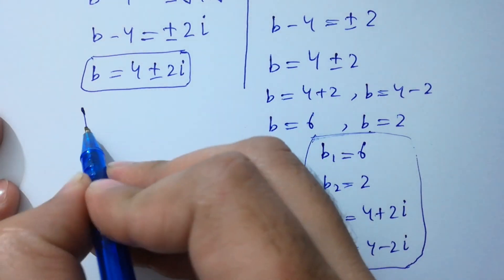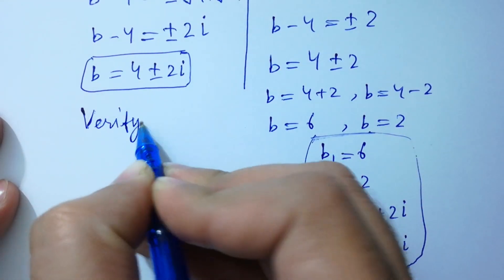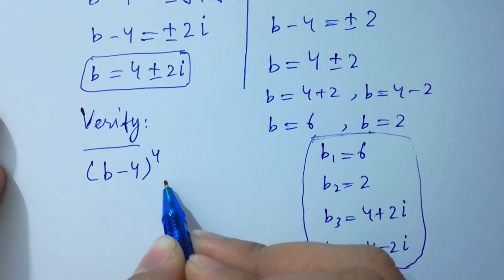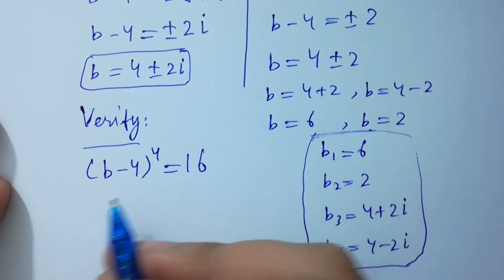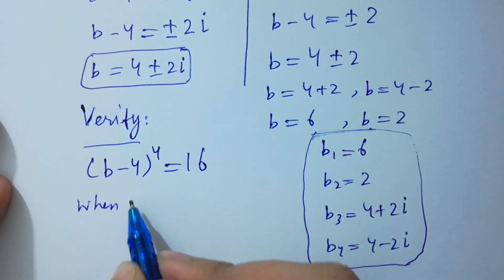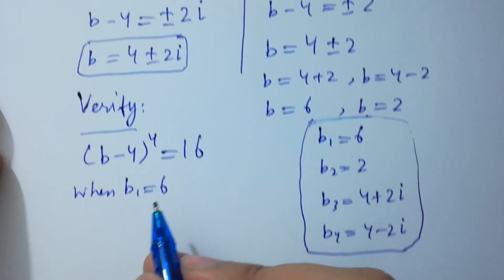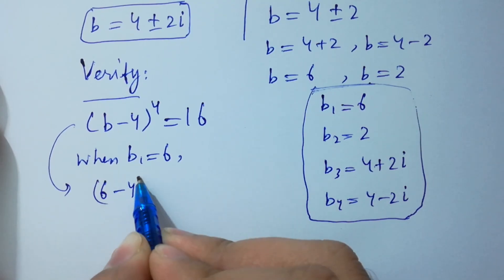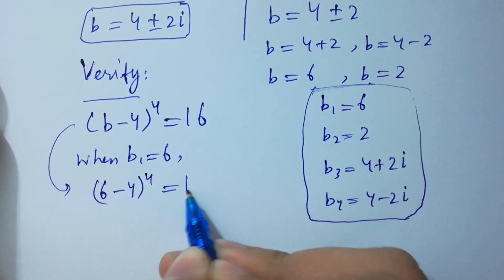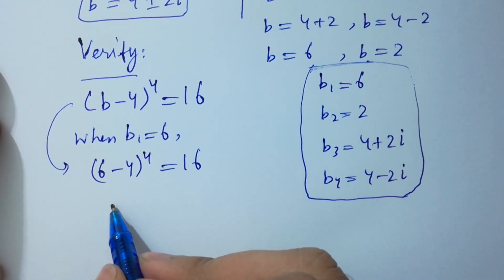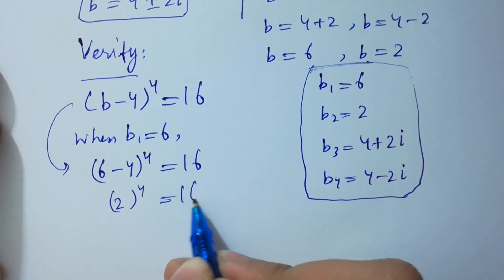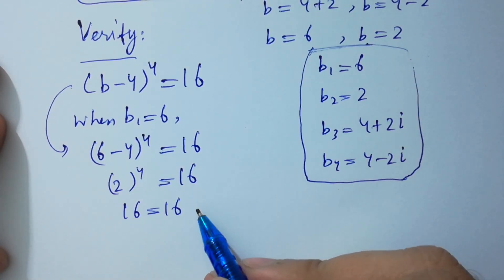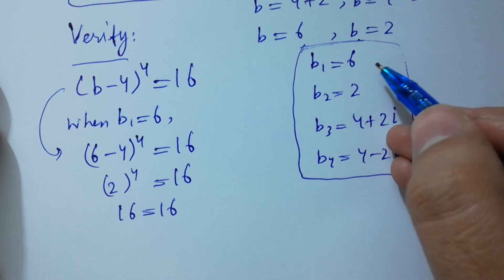Now I am going to verify using (b-4)⁴ = 16. When b₁ = 6, we have (6-4)⁴ = 2⁴ = 16, which equals 16. This satisfies the equation, so b₁ = 6 is correct.